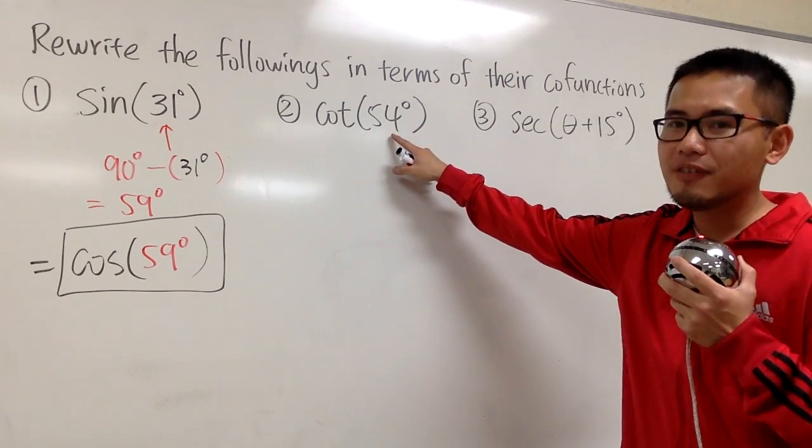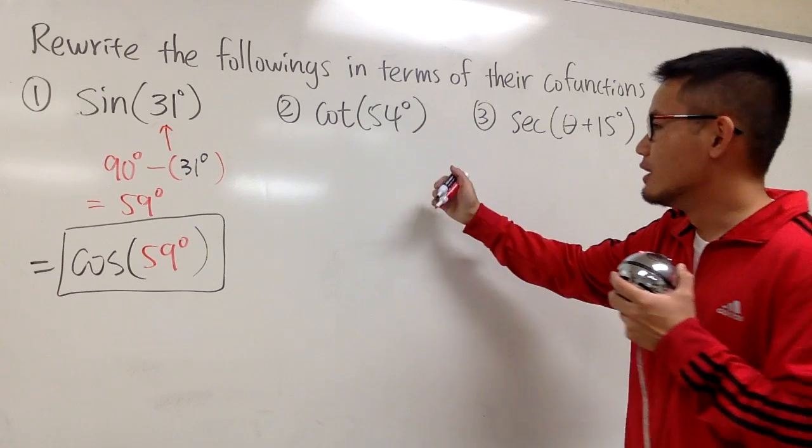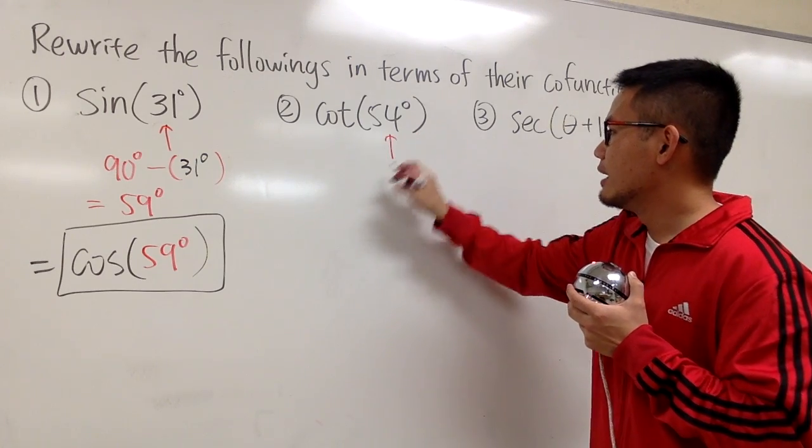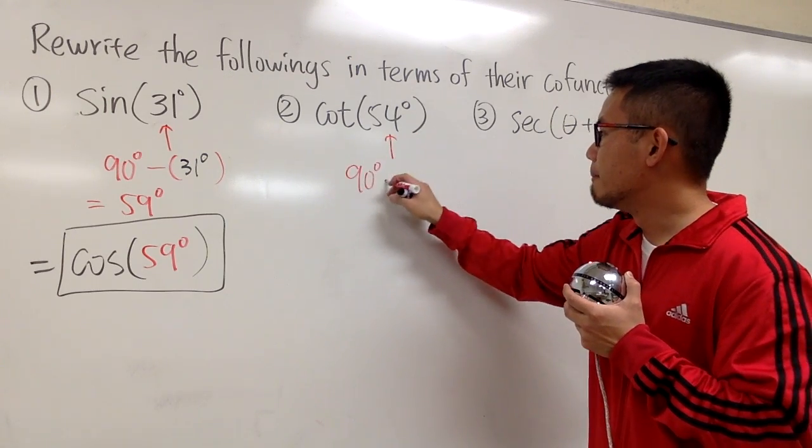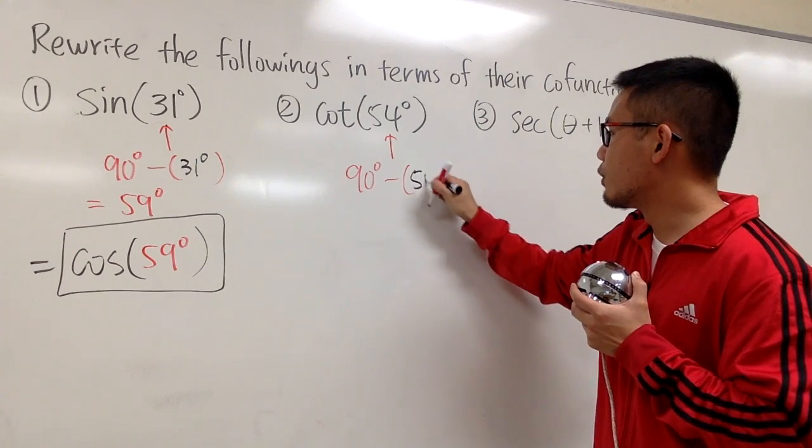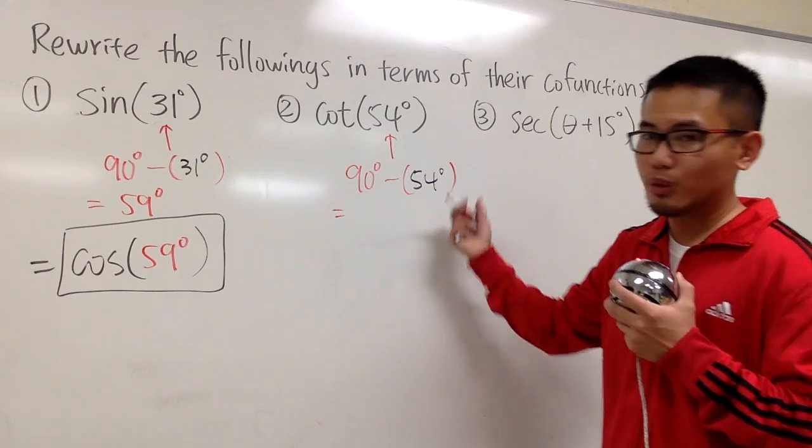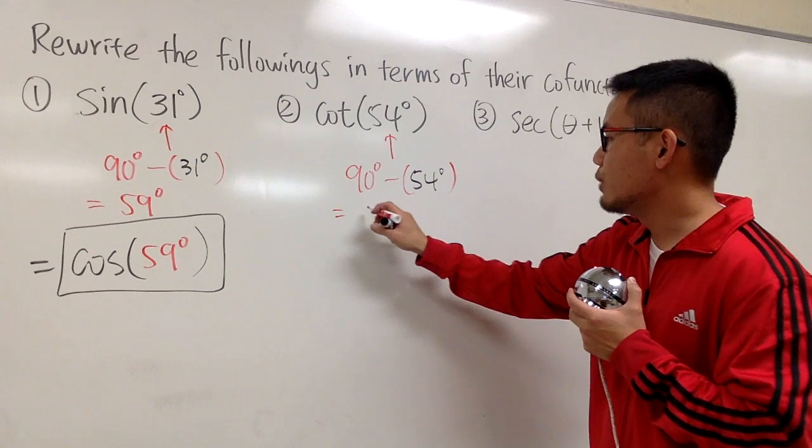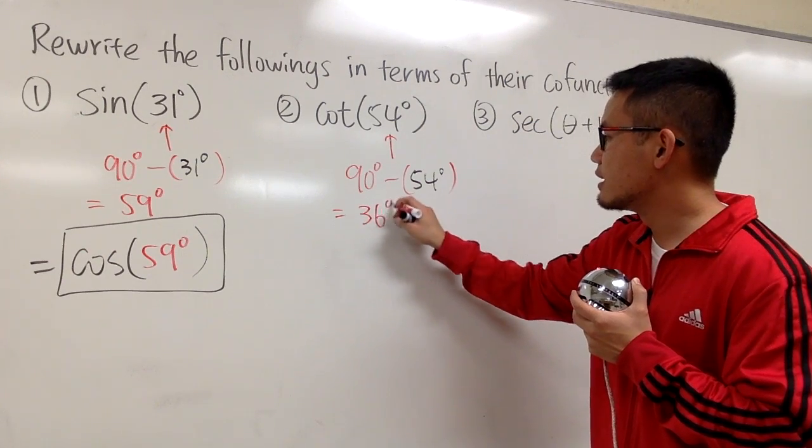And here we have 54 degrees already. Do the same thing. Let's go ahead and do 90 degrees minus the 54 degrees that we already have. And we can just work this out. You subtract, you end up with 36 degrees.